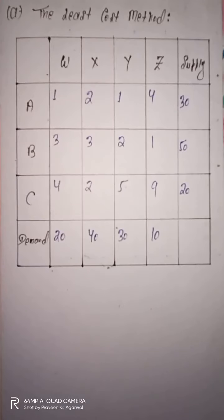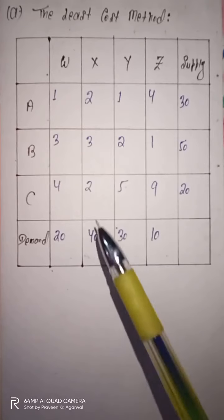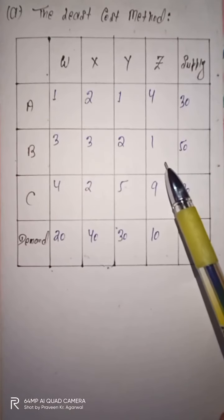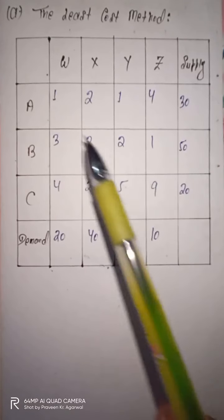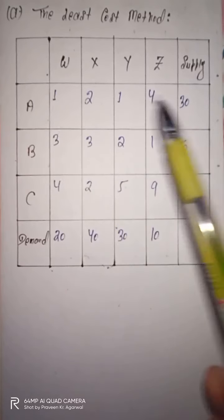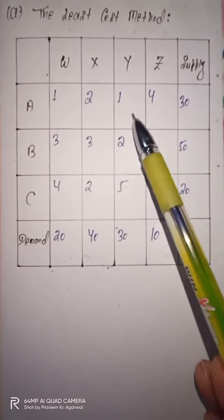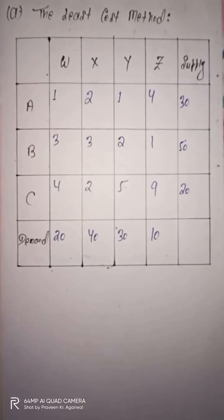Now we will determine the initial solution of this transportation problem by using the Least Cost Method. According to this method, we look at the transportation matrix and find the least cost cell. The least cost is 1, found at cell (1,3). Supply is 30 and demand is 20, so we allocate 20. Supply is 30, demand is 30, so we allocate 30.